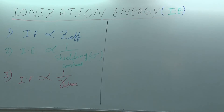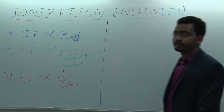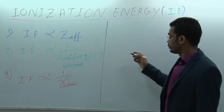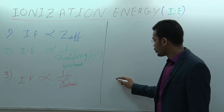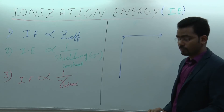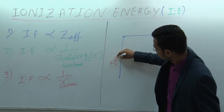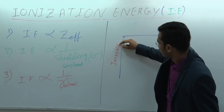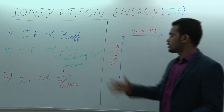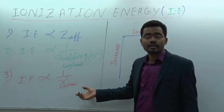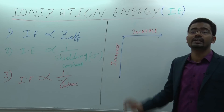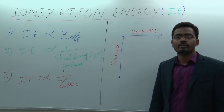Periodic trend for ionization energy: since ionization energy is inversely proportional to atomic radius, and atomic radius decreases across a period, ionization energy increases across a period. This is the general trend. However, there are some irregularities in this general trend.